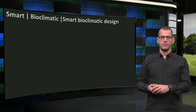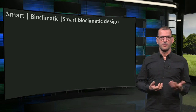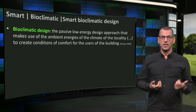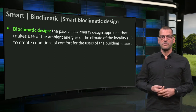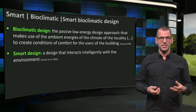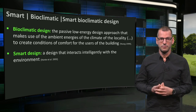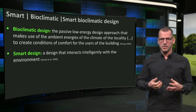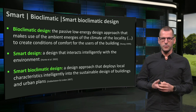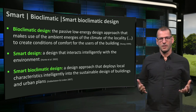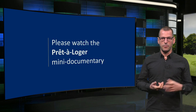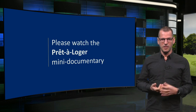Therefore, we want to teach you smart bioclimatic design. The term bioclimatic design was coined by Ken Yang as the passive low-energy approach that makes use of the ambient energies of the climate of the locality to create conditions of comfort for the users of the building. A second term is smart design, seen as design that interacts intelligently with the environment. Together these form smart bioclimatic design: a design approach that deploys local characteristics intelligently into the sustainable design of buildings and urban plans. We will work by this method, exemplified by our next case study, the Pret Allogier House. Please have a look, and I will see you again with the next lesson.